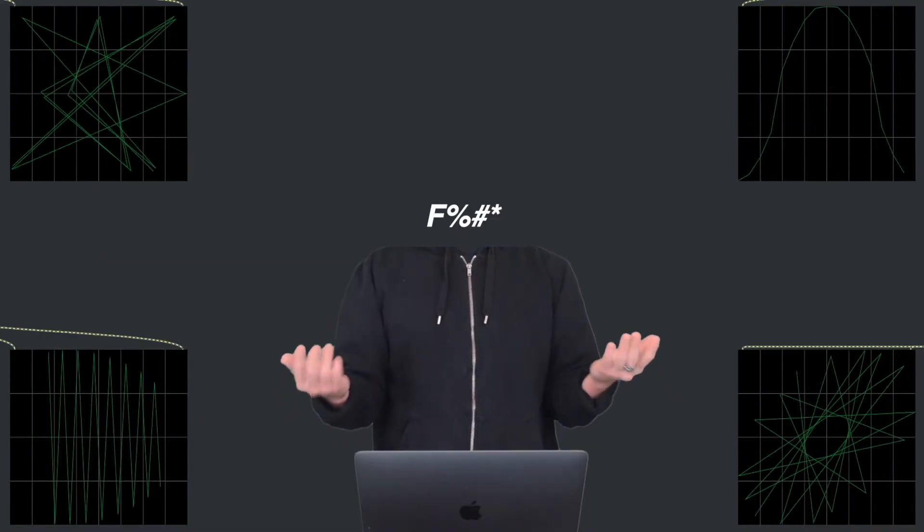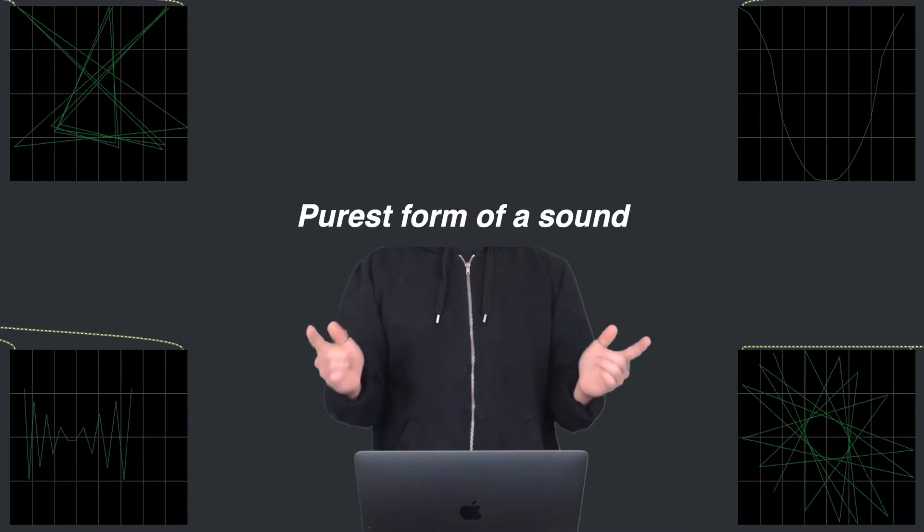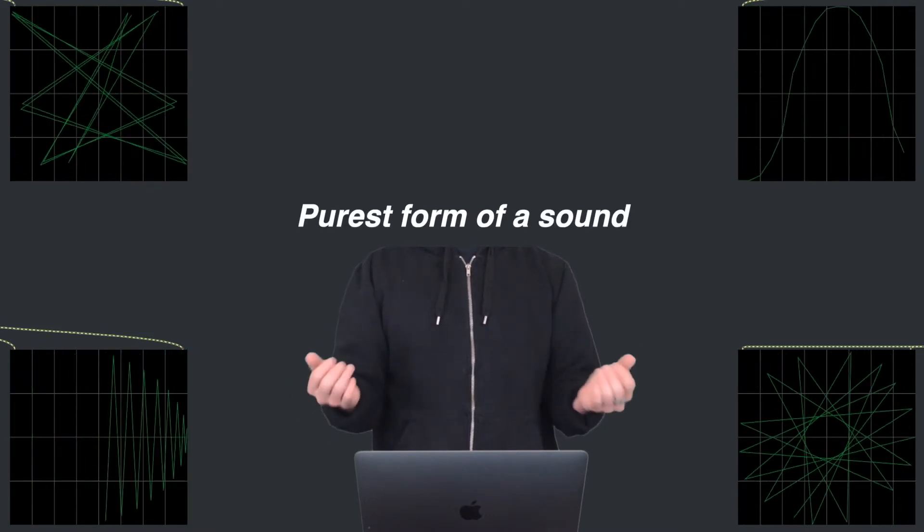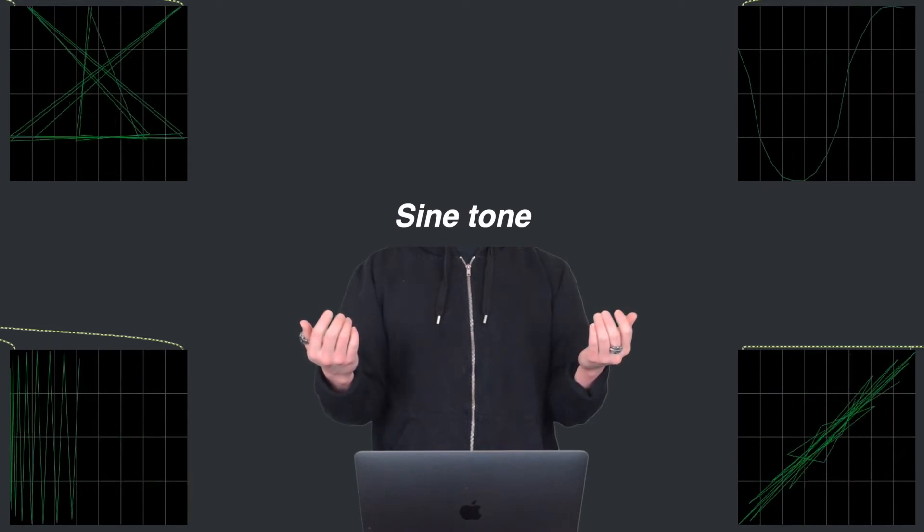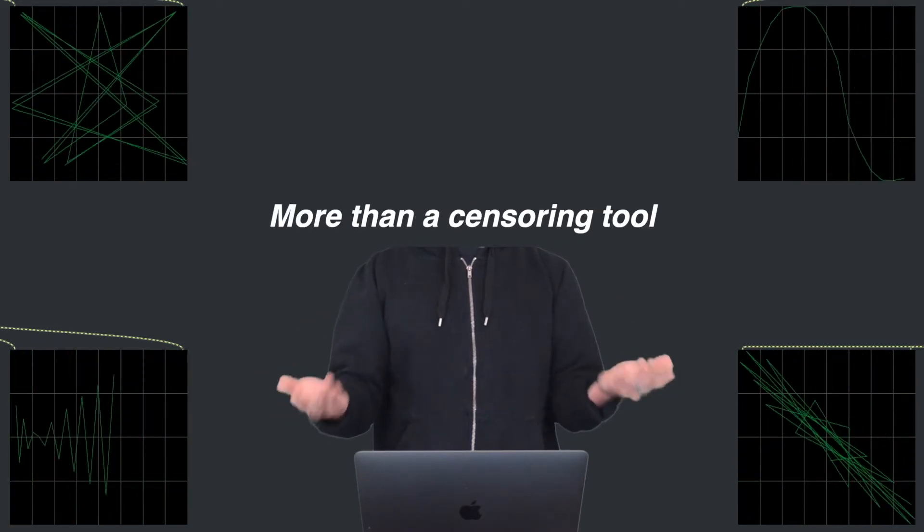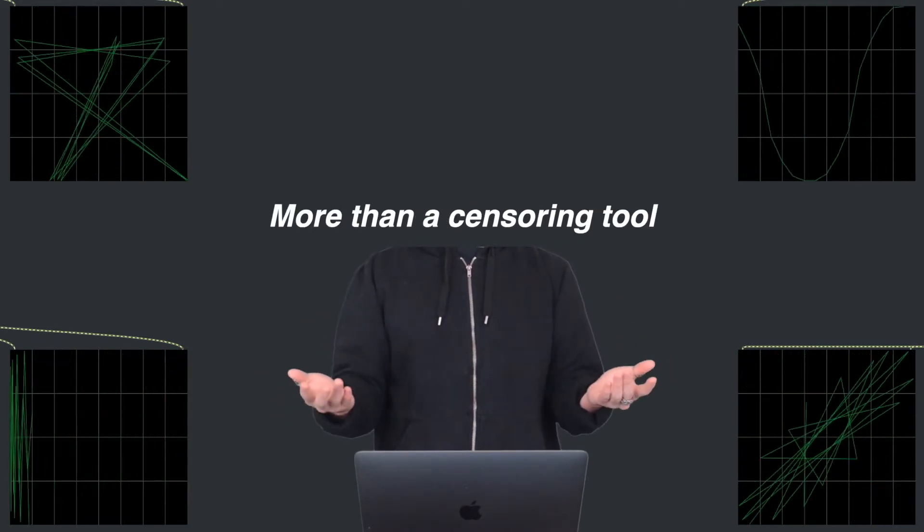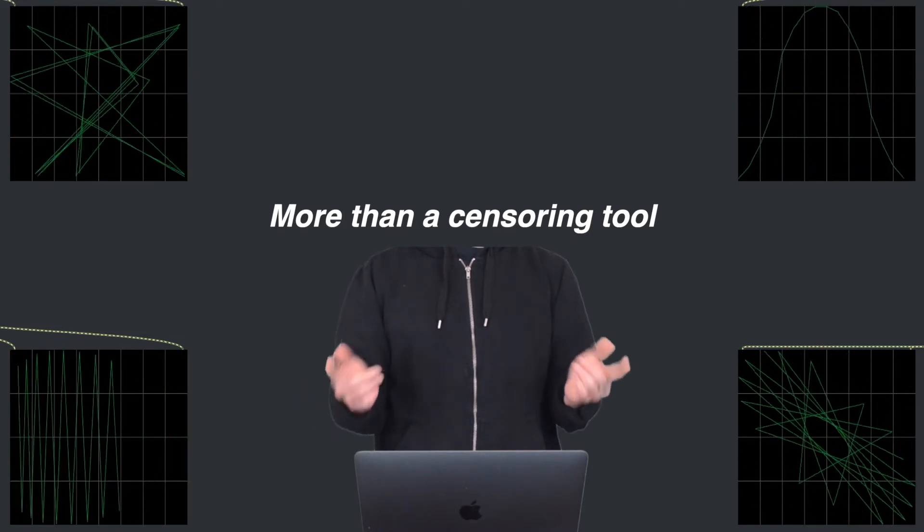Unlike these impure words coming out of their mouth, that bleeping sound is the purest form of a sound and it is called a sine tone. Of course, it is way more than something that is electronically generated to censor out bad words on TV.